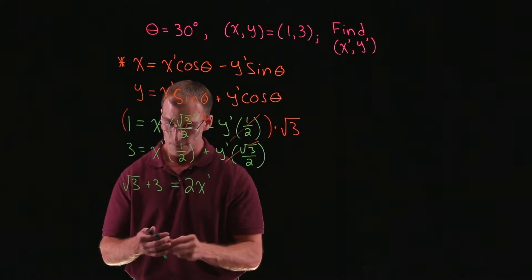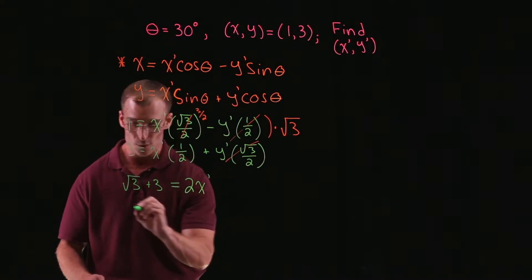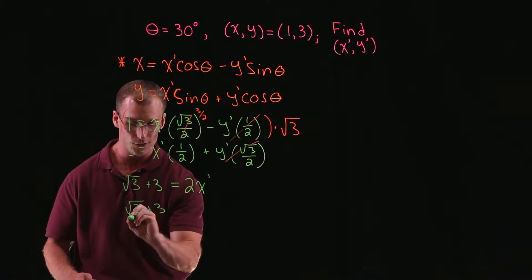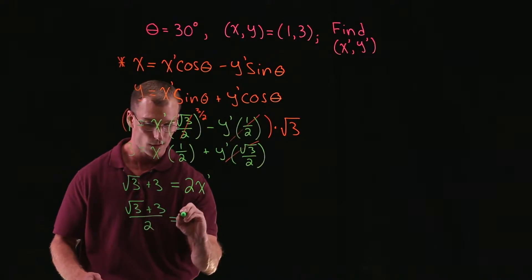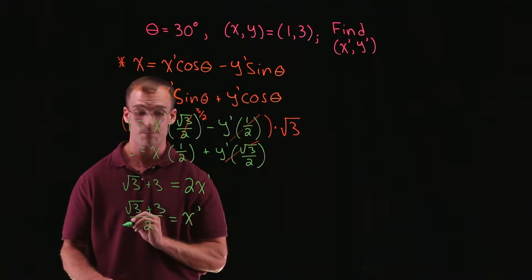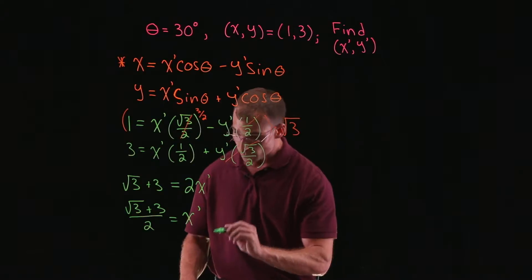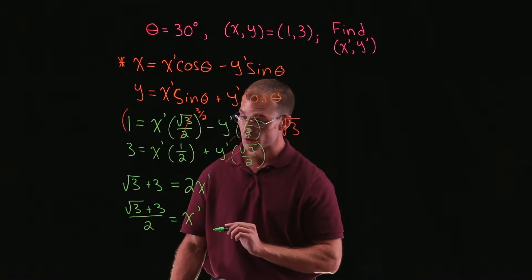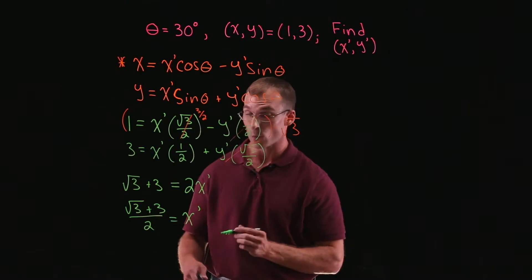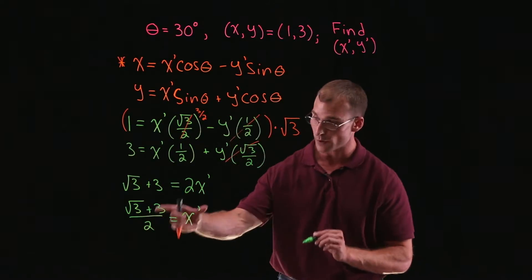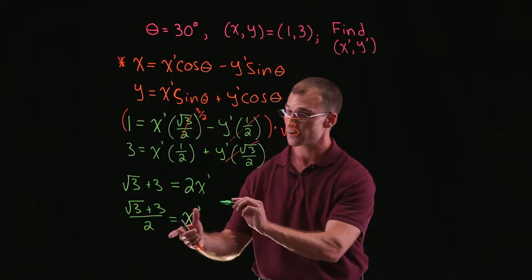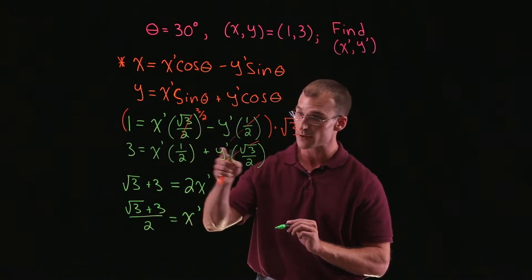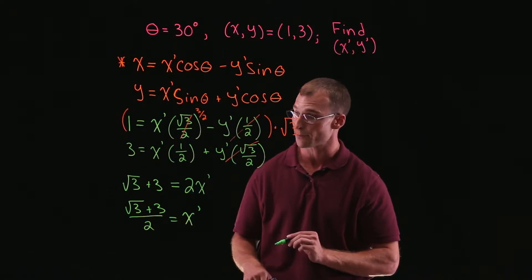So now we have an equation with just x prime, and we can solve for that. Simply dividing both sides by 2, we get x prime equals root 3 plus 3 over 2. Now, to find y prime, we know x prime, so we can plug it back into one of these equations and solve for the remaining unknown y prime.